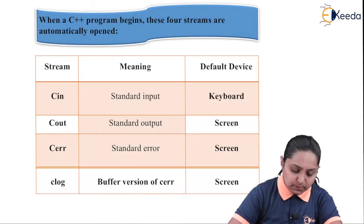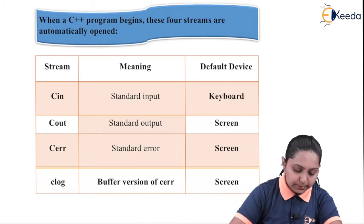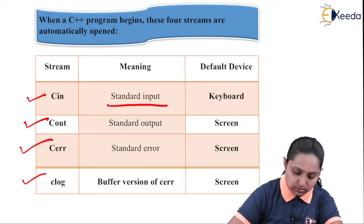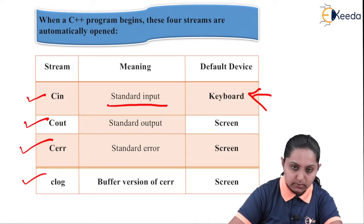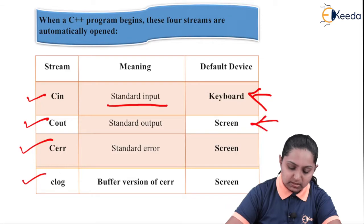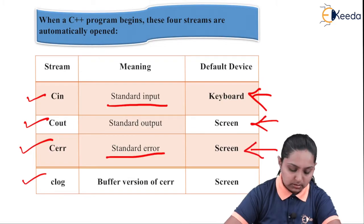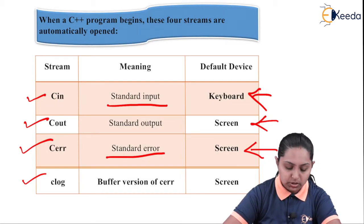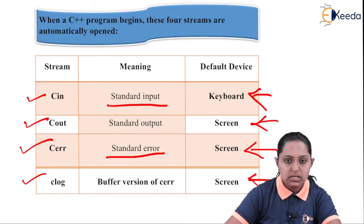When a C++ program begins, there are four streams that are automatically opened: cin, cout, cerr, and clog. cin is used for standard input, typically through the keyboard. cout is for standard output, typically to the screen. cerr is for standard error output, also displayed on the screen. clog is a buffered version of cerr, meaning whatever error you get can be logged through clog and seen on the screen.